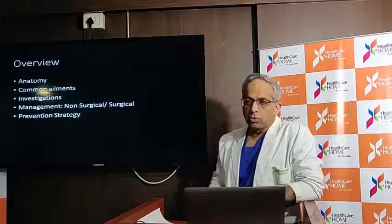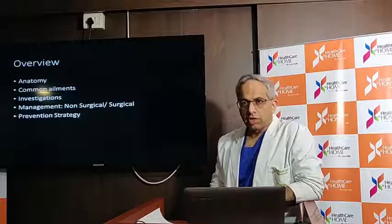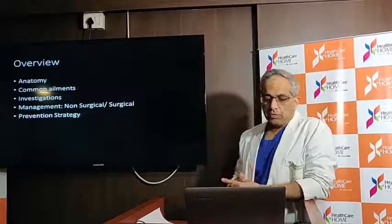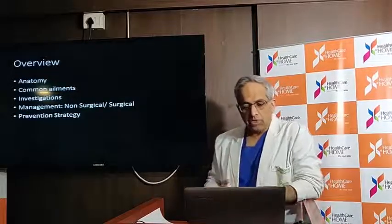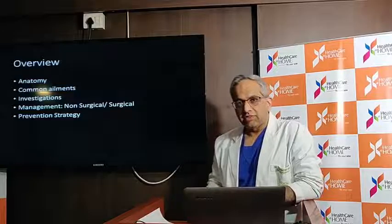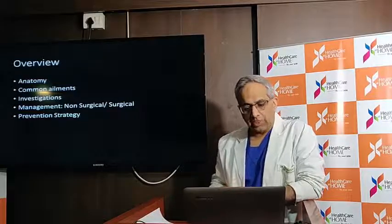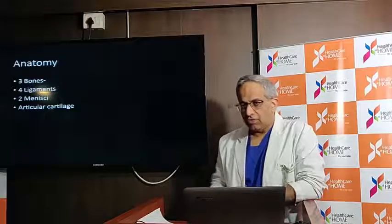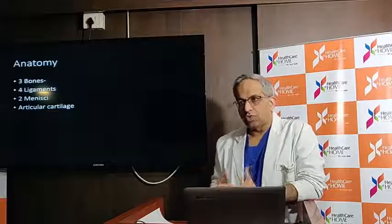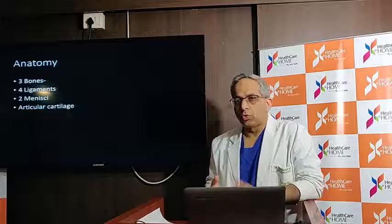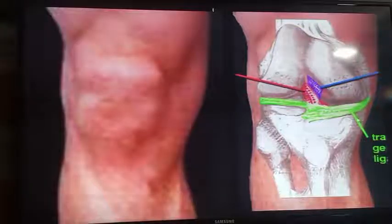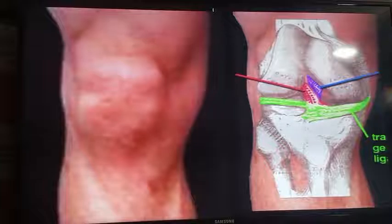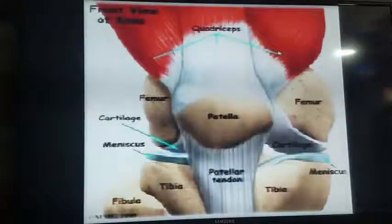This is the overview I am going to take for knee problems. I will talk about the shape of the knee, common problems, investigations, management options, and some prevention strategies. If you look at the knee joint, there are three bones: the thigh bone also called the femur, the leg bone also called the tibia, and on top there is a knee cap called the patella.